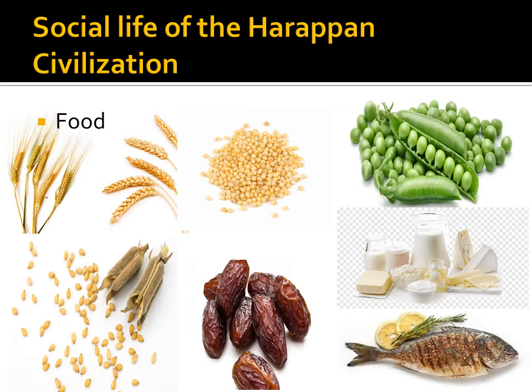Due to pastoralism, that is cattle rearing, the diet also consisted of milk and milk products like ghee and buttermilk. A fishing hook has been found in the remnants of the civilization, so their food must have included fish also.